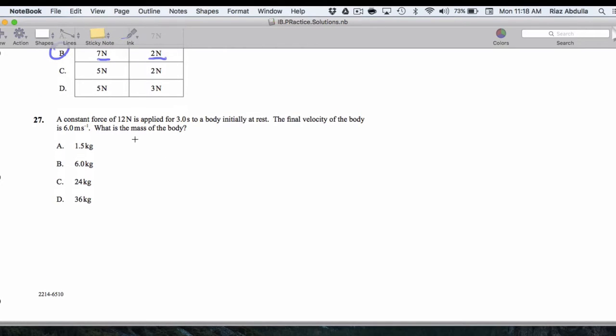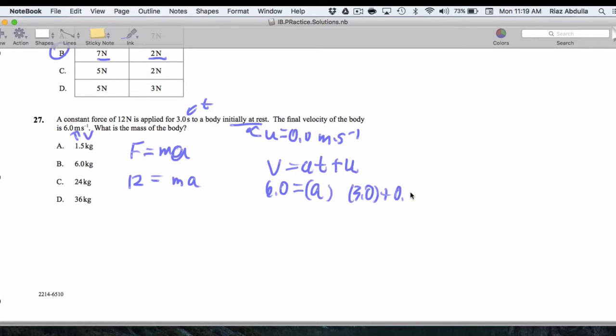And then 27, we want the final velocity here. I've got a couple things. When I don't have a free-body diagram to draw, I just go with F equals MA. Let's see what we can get. We got 12 equals M times A. I don't know what A is, so I've got a time. I've got a V final, and initially at rest means U is 0.0 meters per second. So I'll use V equals AT plus U to get the acceleration. That's going to be 6.0 equals A times 3.0 plus 0.0, so A is going to be 2.0 meters per second squared. Throwing it into the formula, I have 12 equals M times 2.0, so M is going to end up being 6.0 kilograms.